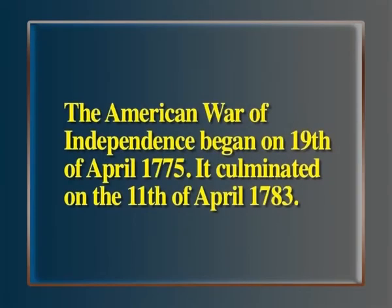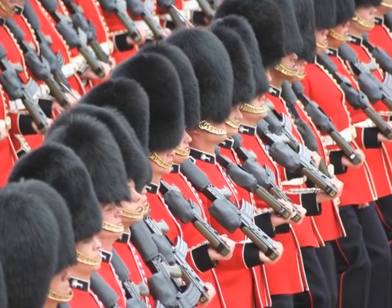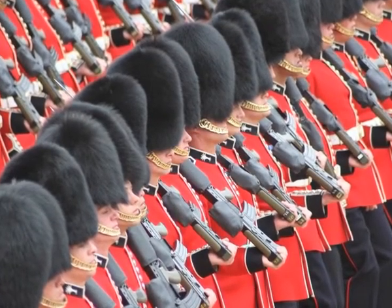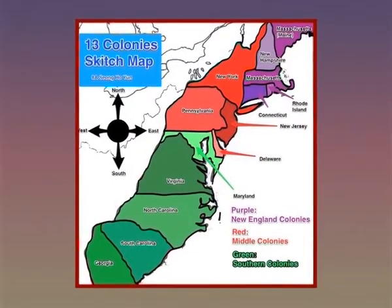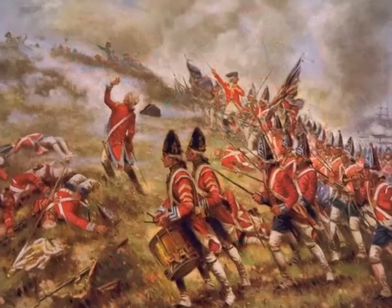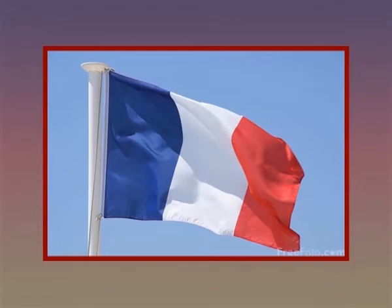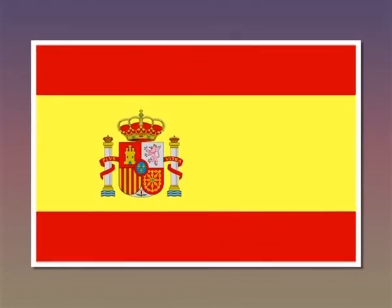The American War of Independence began on the 19th of April, 1775. It culminated on the 11th of April, 1783. The major contestants in the war were the British and the population that inhabited the 13 colonies of the British in North America. Apart from the British, the Dutch, the French and the Spanish governments were also involved in the war.